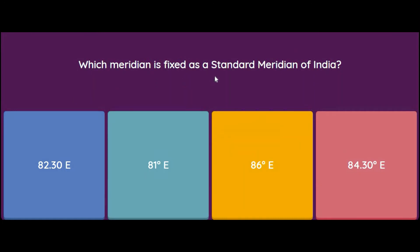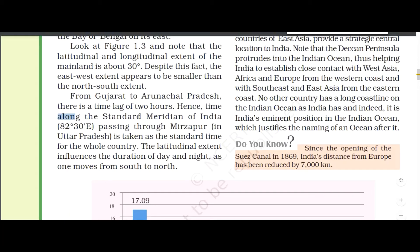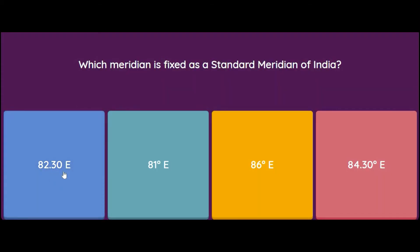Which meridian is fixed as the standard meridian of India? Options: 82°30'E, 81°, 86°, or 84°30'E. The standard meridian of India is very important for time. It passes through Mirzapur in Uttar Pradesh and is fixed at 82°30'E. As stated in the book, the time along 82°30'E passing through Mirzapur is taken as standard time for the whole country. So the correct answer is 82°30'E.